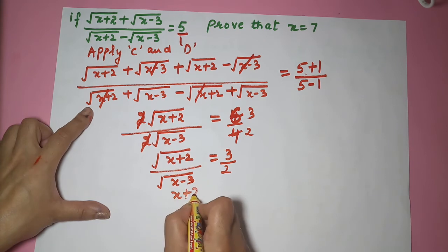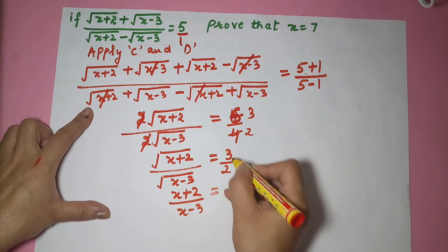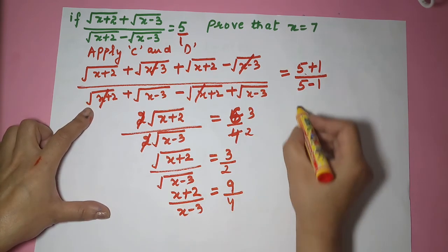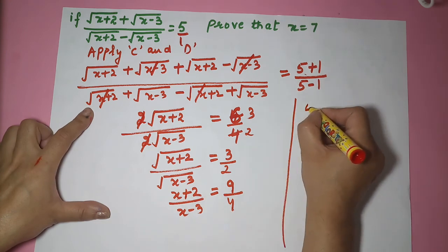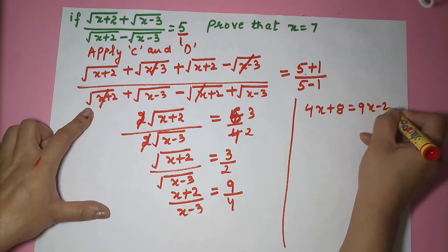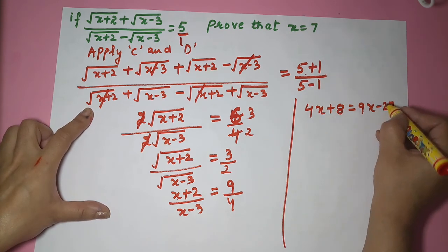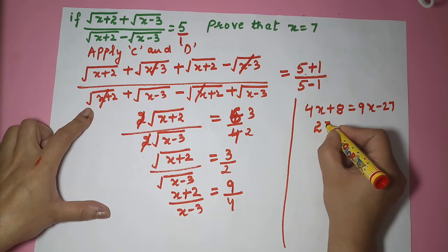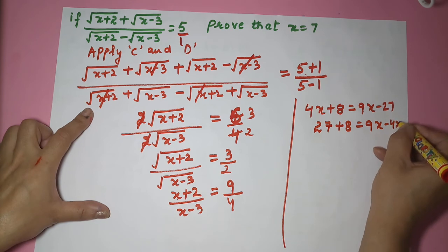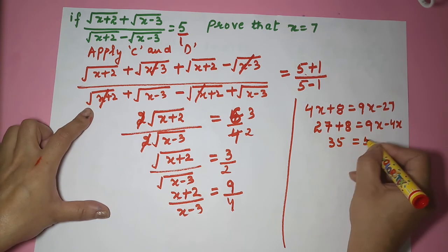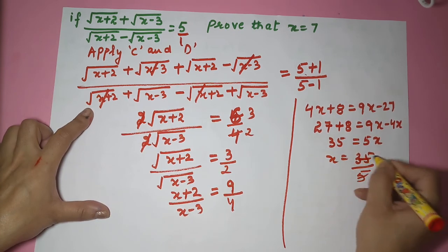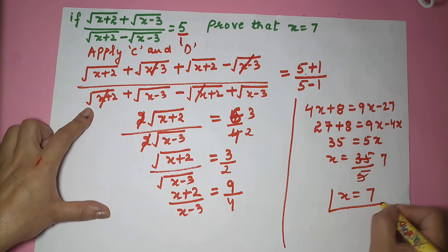To get rid of the root, we square both sides, getting x plus 2 upon x minus 3 equal to 9 by 4. Cross multiplying: 4x plus 8 equals 9x minus 27. Shifting terms: 27 plus 8 equals 9x minus 4x, so 35 equals 5x, giving x equal to 7.